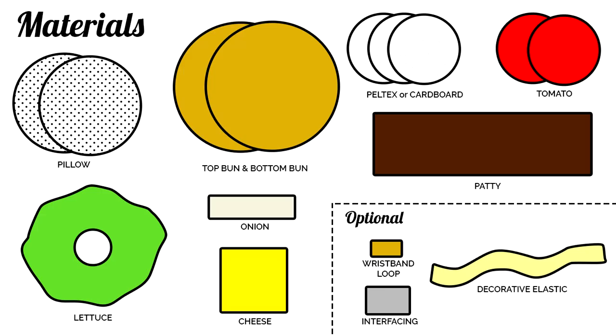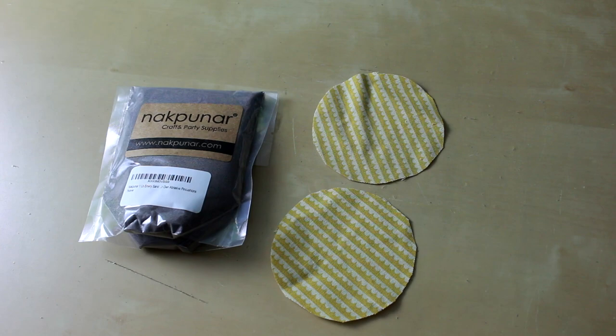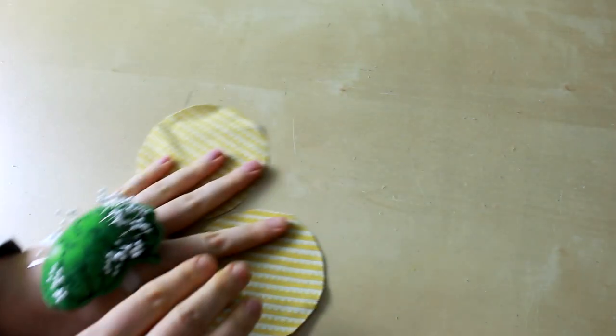Needle and thread. And optional decorative elastic for the wristband version of the pin cushion in a width of half an inch or 5 eighths of an inch. You can use other widths, but you may need to adjust the size of the wristband loop on the pattern to accommodate the different width. Optional emery sand if you're making a tabletop sharpening pin cushion. Alright, let's get started.